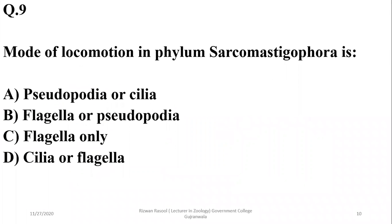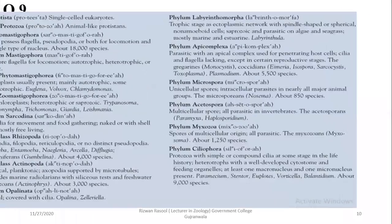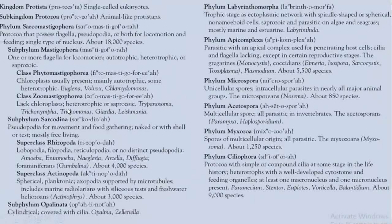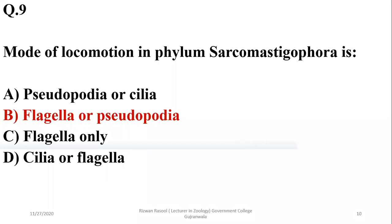Question nine: the mode of locomotion in phylum Sarcomastigophora. Members may move with the help of flagella, pseudopodia, or both. So the correct option is B. Sarcomastigophora consists of subphylum Mastigophora, which uses flagella, and subphylum Sarcodina, which has various types of pseudopodia.